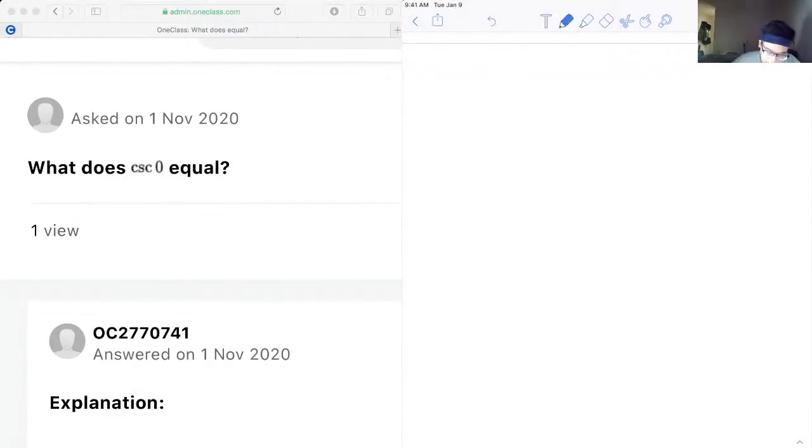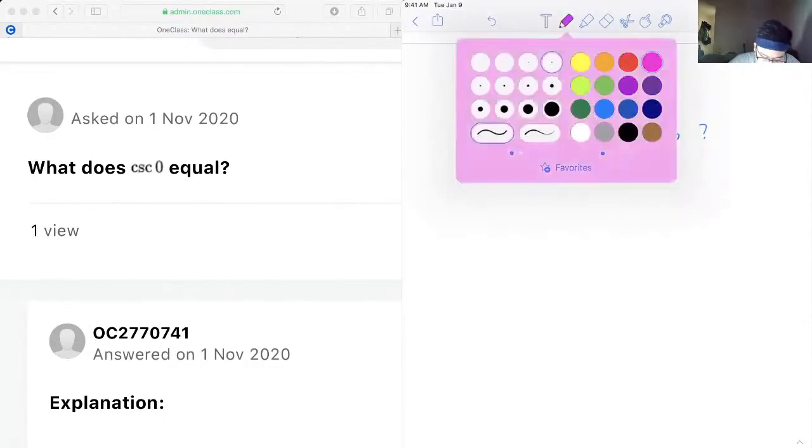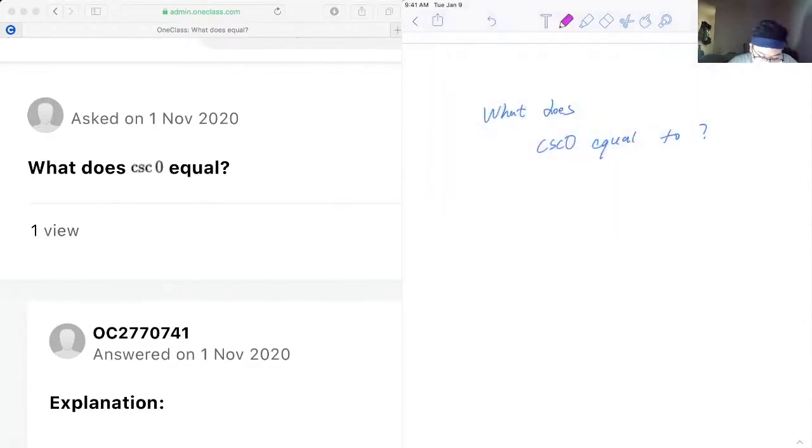The next question is asking what does cosecant zero equal to. Before finding the value for cosecant zero, first we need to know that according to identity...